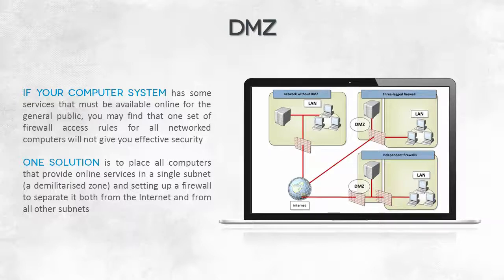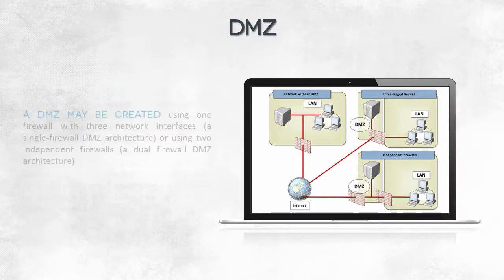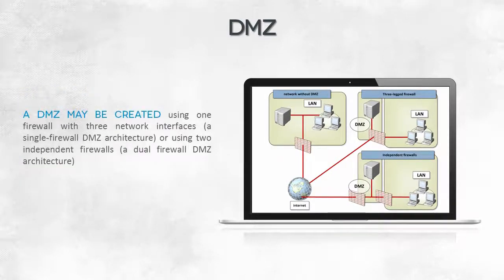The firewall should protect the high-risk, dedicated computers. To achieve that, you need a firewall with three interfaces. For each of the internal interfaces, there is a separate set of rules that protect the network connected to that interface.